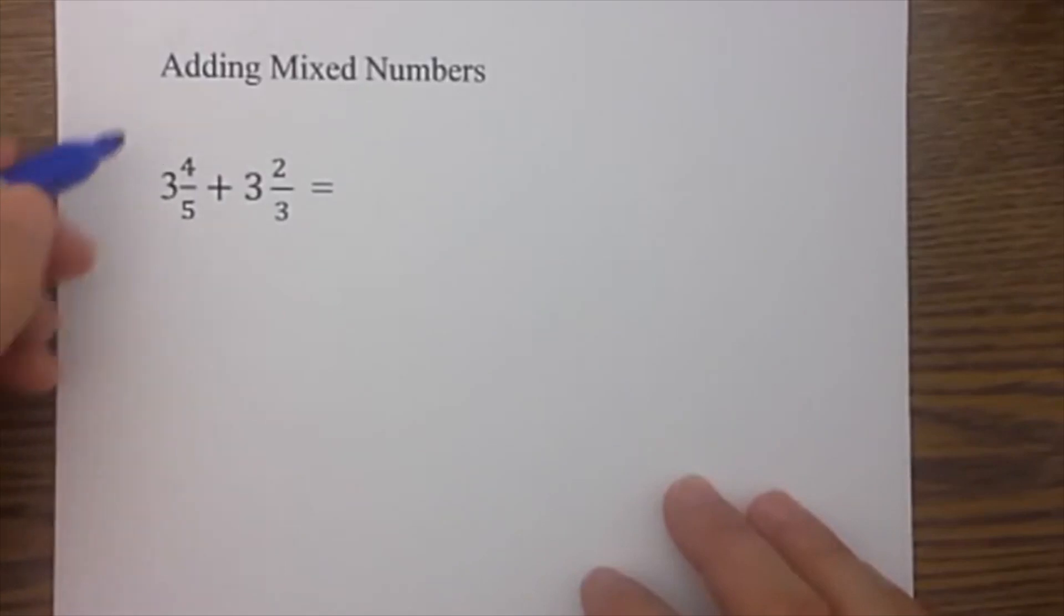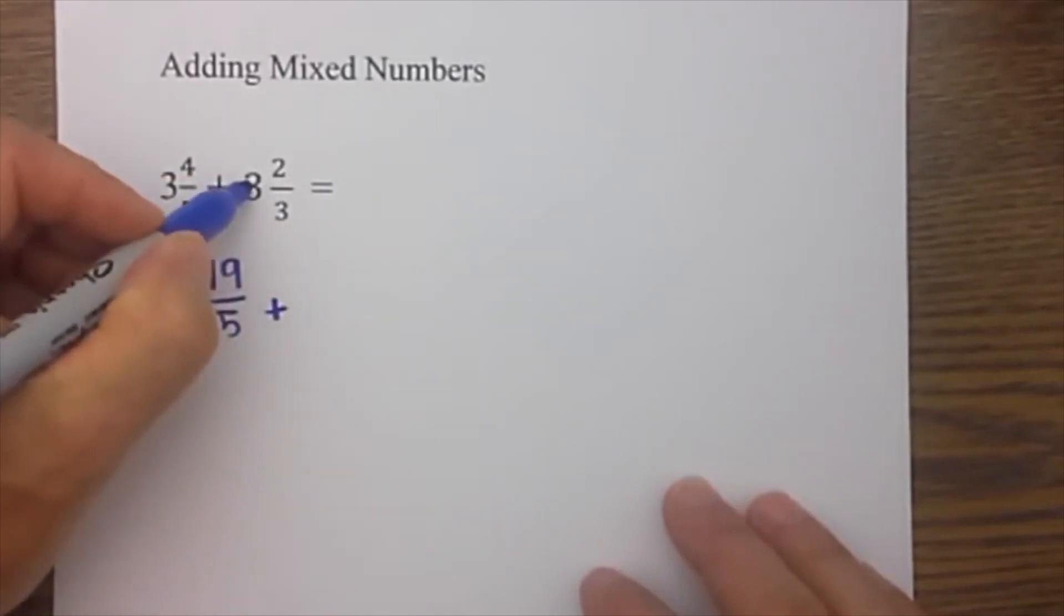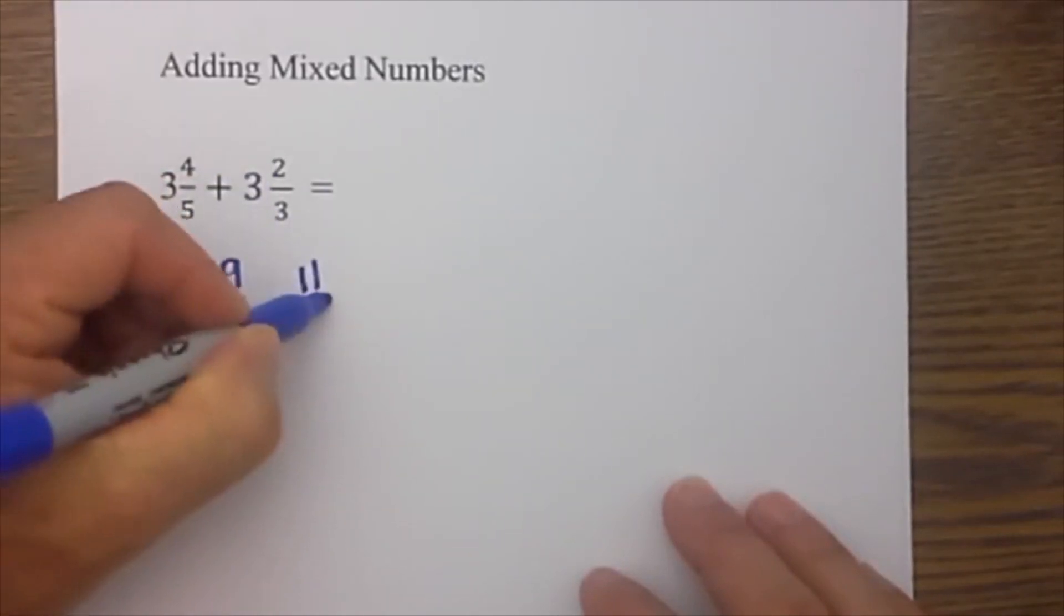Let's go ahead and get started. To first convert this to an improper fraction, you take the denominator times the whole number plus the numerator. So it's 5 times 3 which is 15 plus 4 which is 19 over 5, plus 3 times 3 is 9 plus 2 is 11 thirds.